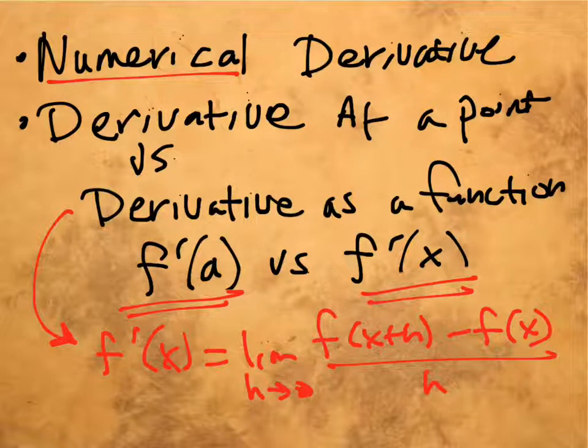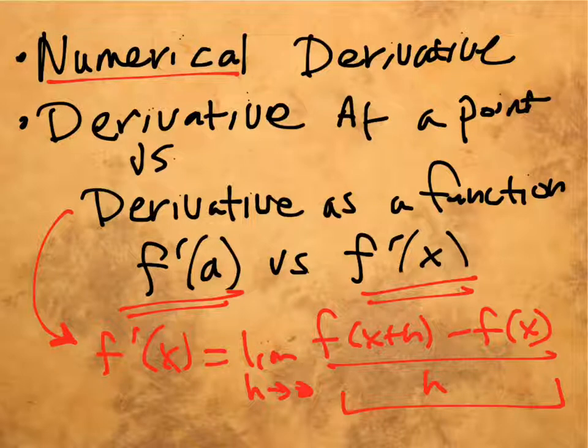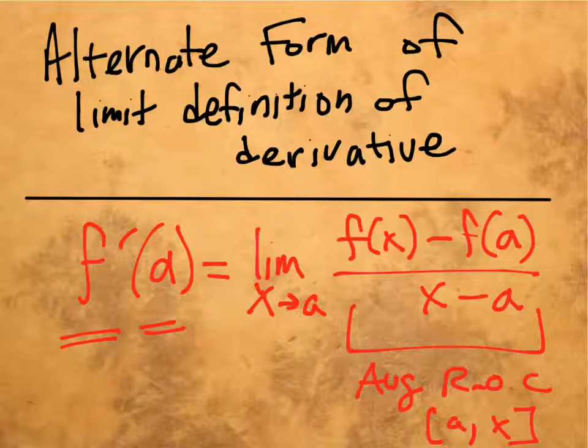That's the limit as h approaches 0 of this quantity which is called the difference quotient as opposed to the average rate of change. This will give you a function whereas this new form will give you a number.